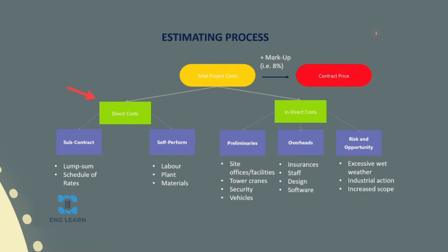The first step in the estimating process will be to determine direct costs. Direct costs will always form the bulk of the project costs — usually over 70 percent of the total project costs will be direct costs. To determine our direct costs, we'll need to develop our work breakdown structure and determine all the work required to complete, develop our delivery solution — so work out how we're going to complete the works — then quantify the costs for each scope item: the labour, plant, materials and subcontract costs for each of these.